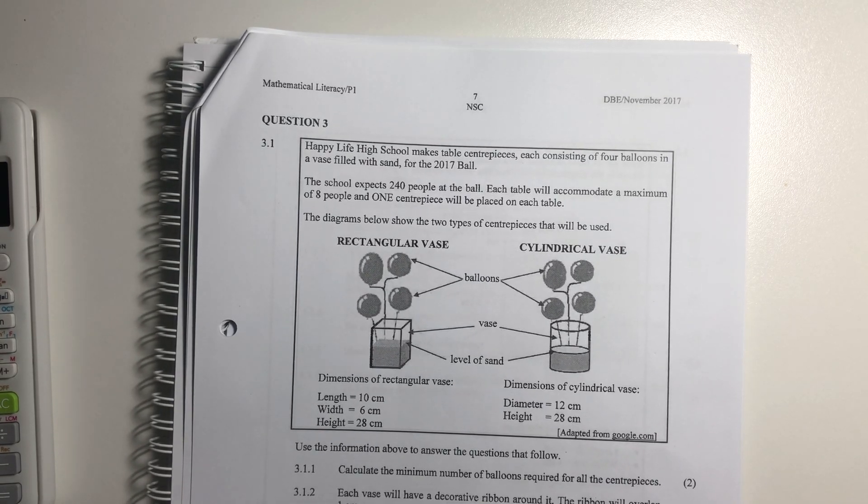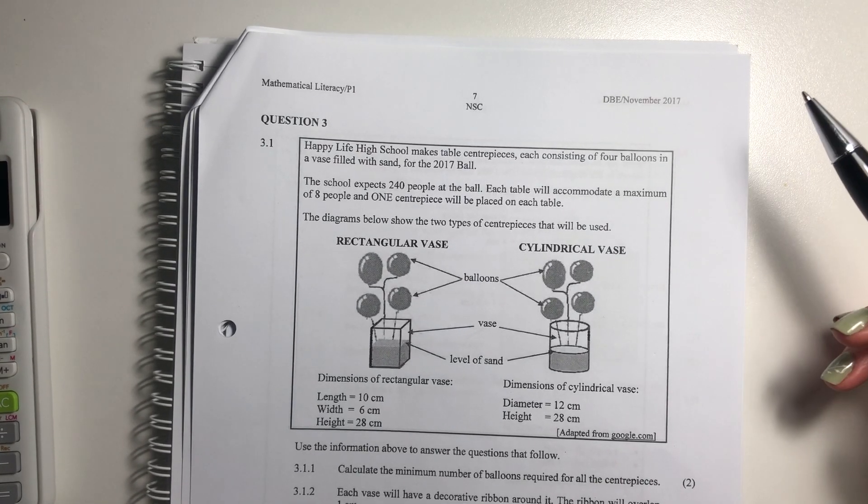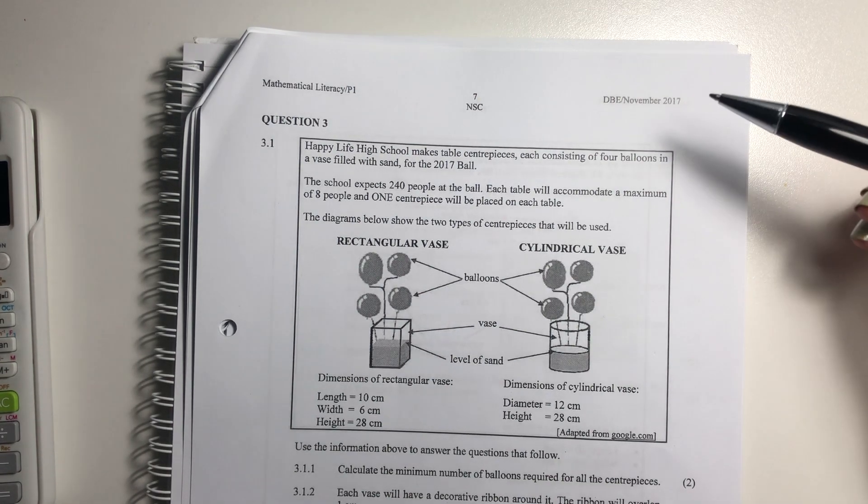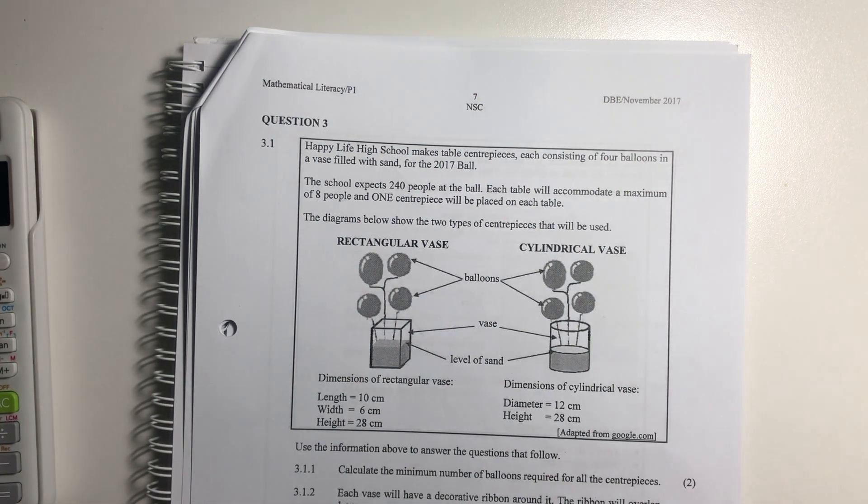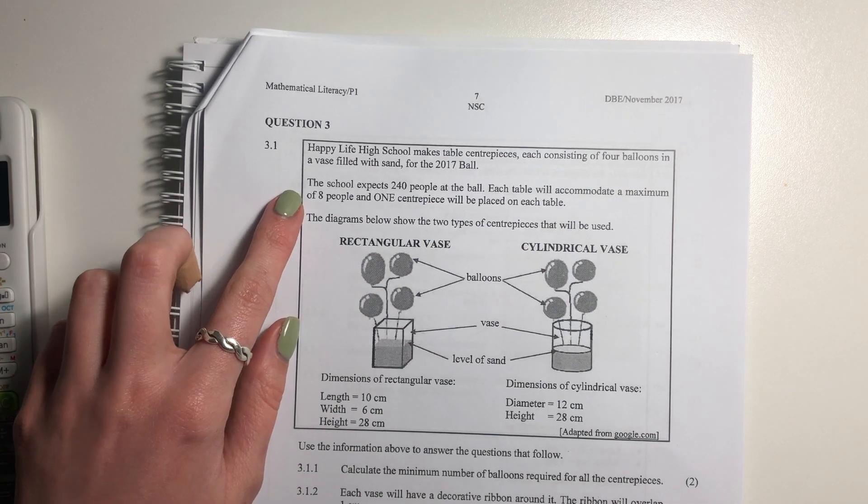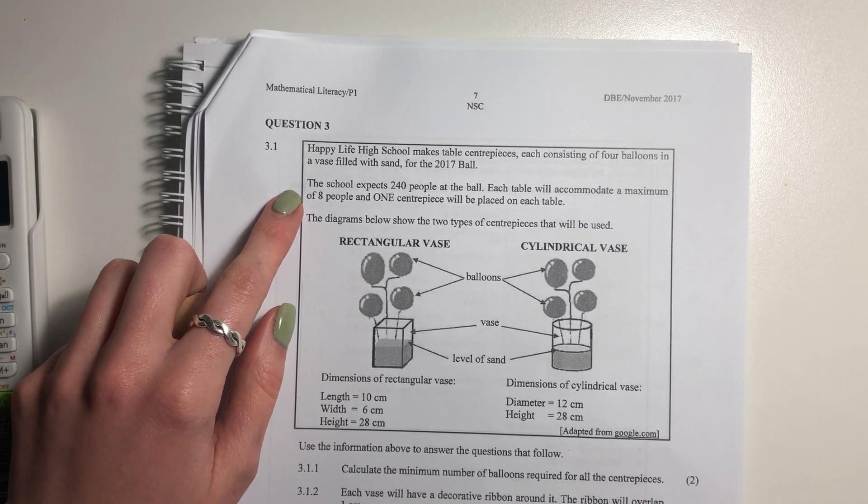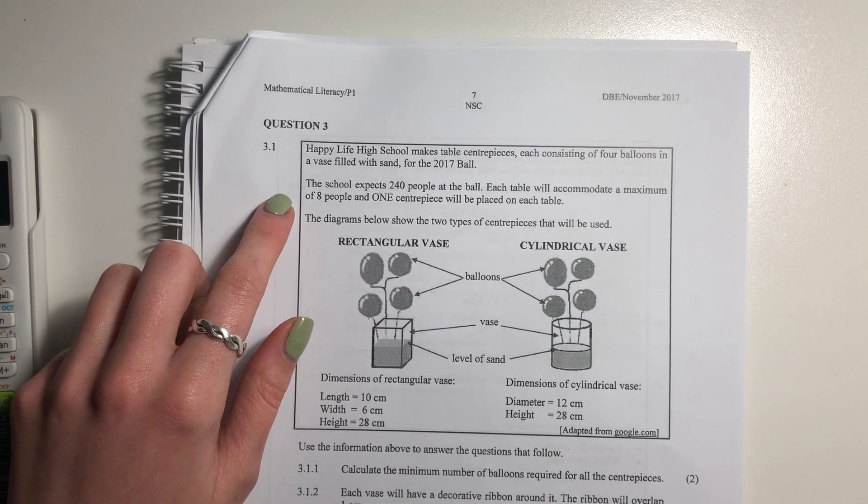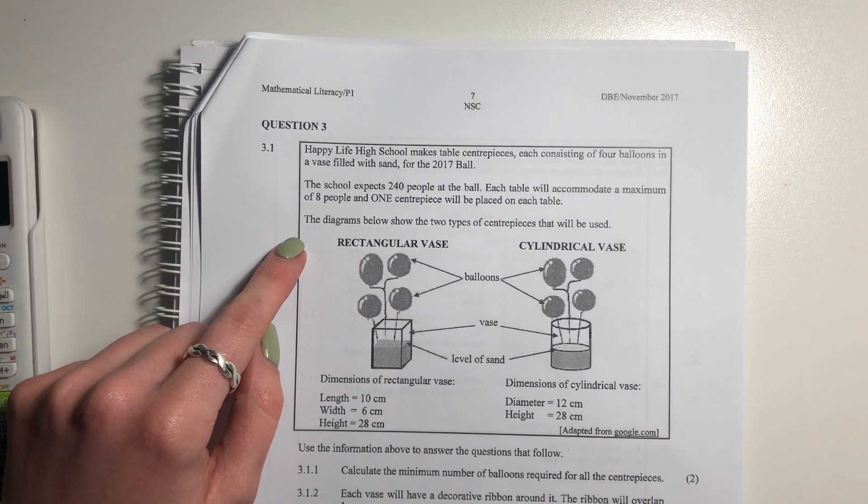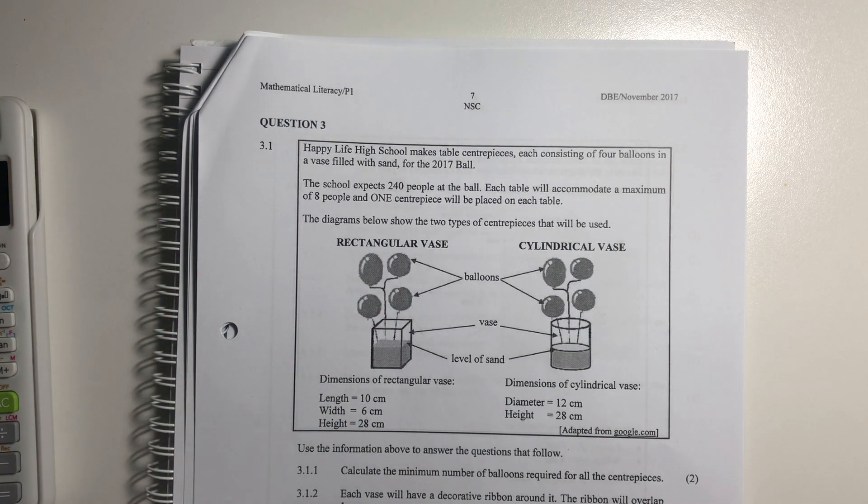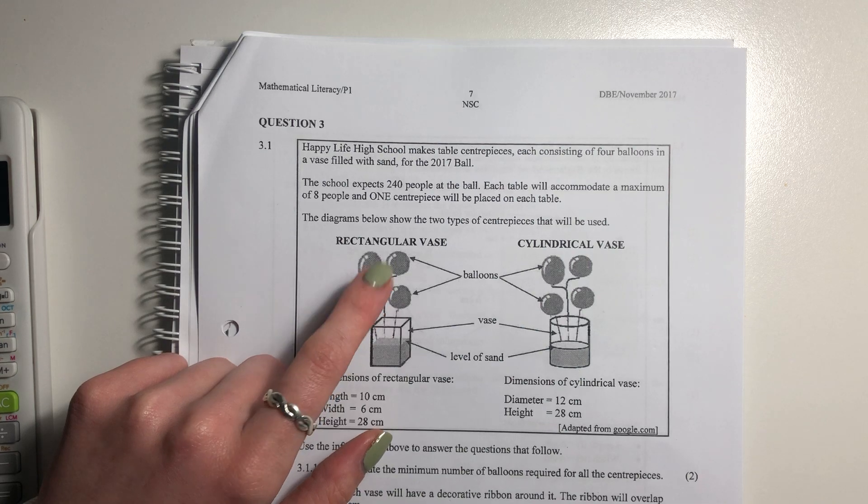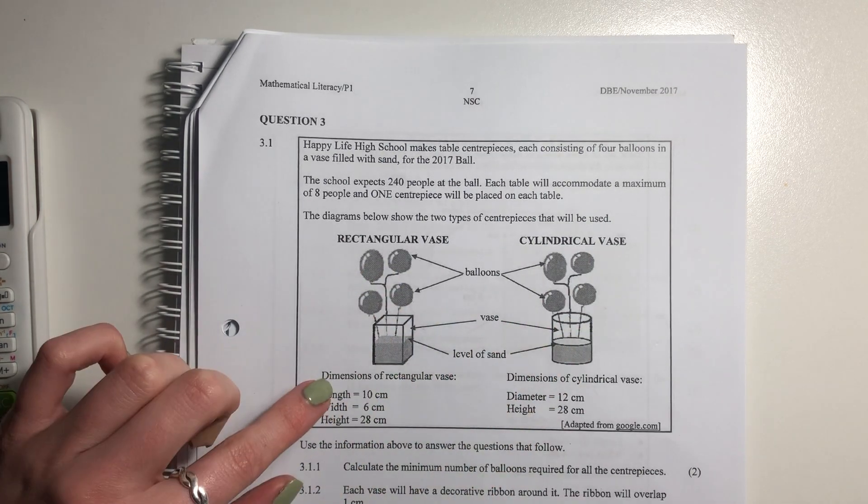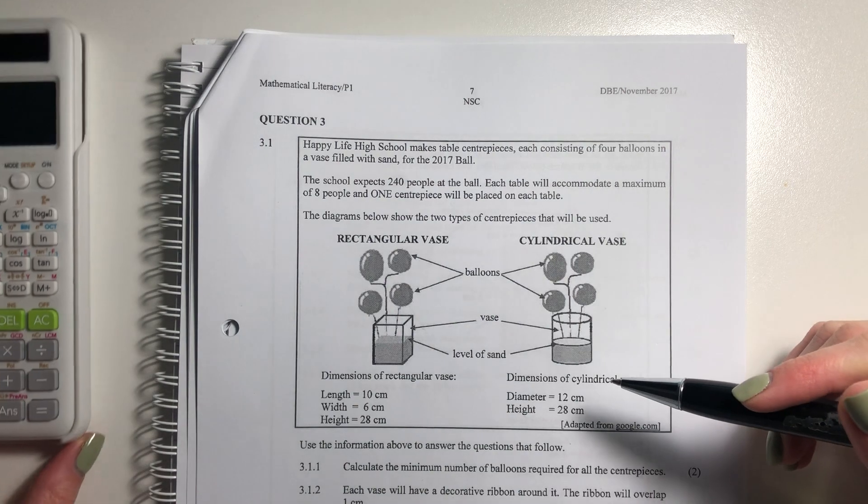Okay, question three. It says Happy Life High School, which is an interesting name, makes table centerpieces, each consisting of four balloons in a vase filled with sand for the 2017 ball. I presume it's like a matric dance vibe. The school expects 240 people at the ball. Each table will accommodate a maximum of eight people and one centerpiece will be placed on each table. The diagram below shows the two types of centerpieces that will be used.